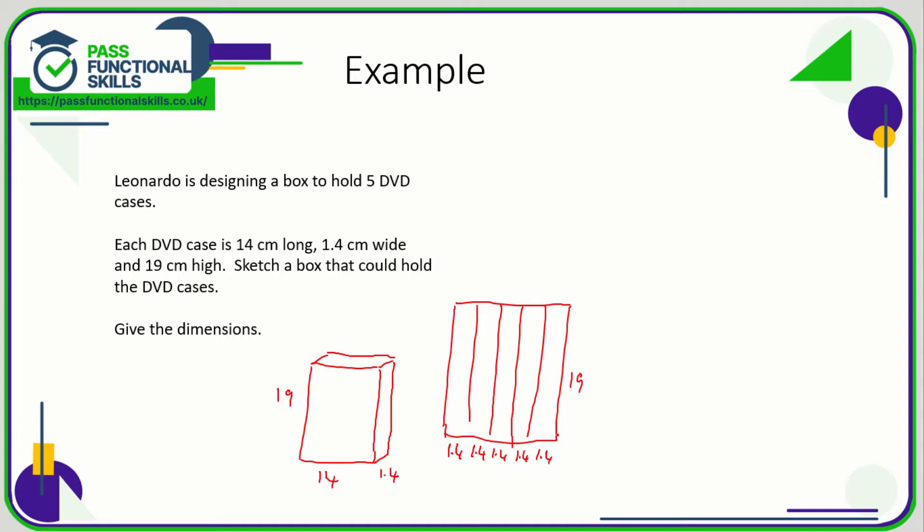So there we have our box. So here's a slightly better drawn box. So to fit in the five DVDs, they're going to be sort of fitted in like this, so the width here is going to be 5 multiplied by 1.4, the depth of the box is going to be 14, and they need to be 19 high.